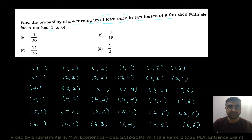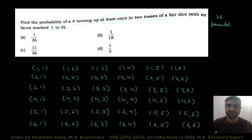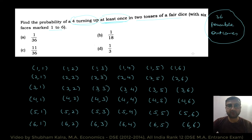This is how the sample space is going to look like. Yaha pe humare paas 36 possible outcomes hain, and ye sare outcomes equally likely hain. So, ab count karte hain favorable number of outcomes.